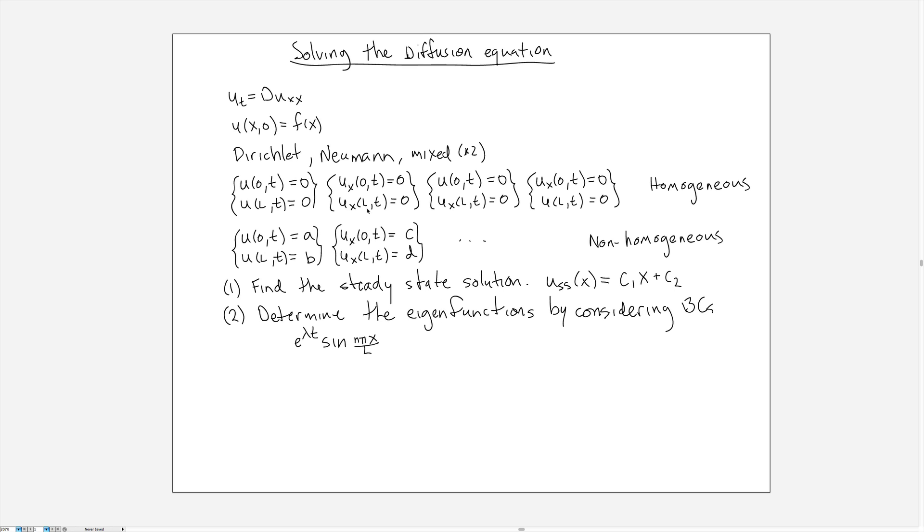If you're in the Neumann case then the eigenfunctions involve cosines because the cosine function has zero slopes at the endpoints, and if you're in the mixed conditions, for example this first one, you want a zero value at the origin and a zero slope at L and so you would work with the sine of n pi X over 2L, and if you're in this type of mixed condition you would work with the cosine of n pi X over 2L.